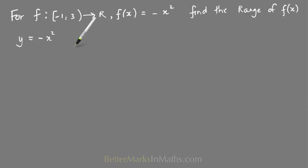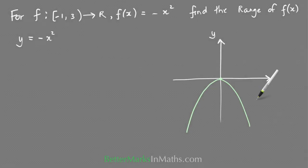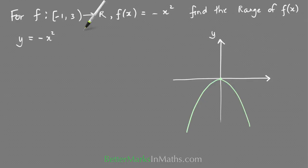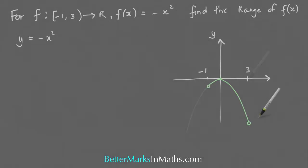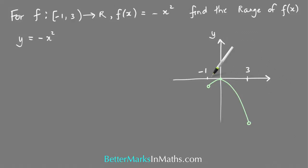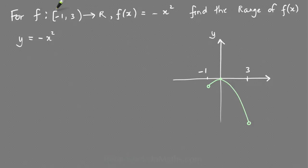Sketching y = −x² gives an upside-down parabola. The domain runs from x = −1 to x = 3, so x = −1 is here and x = 3 is over here. There is the graph from x = −1 to x = 3.